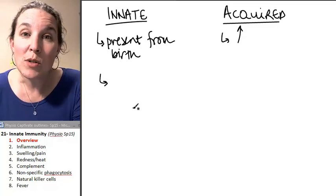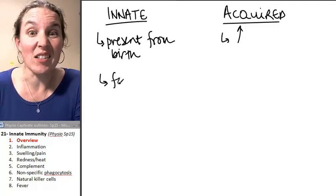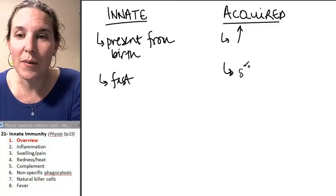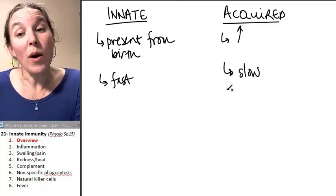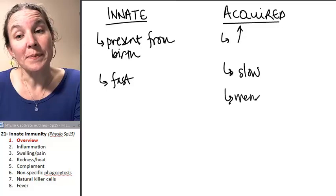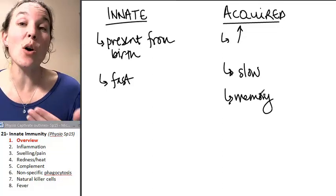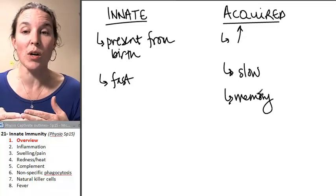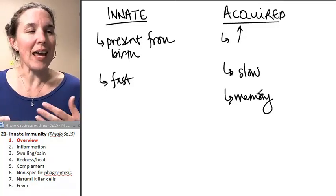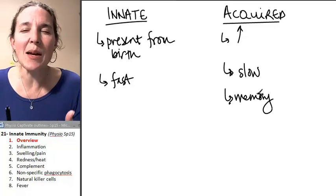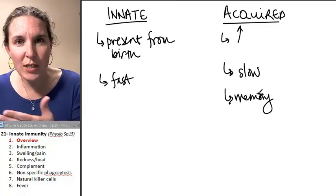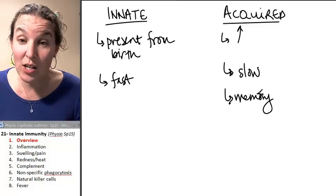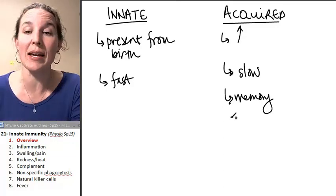The innate immune response is fast. Guess what the acquired immune response is? Slow. The acquired immune response has memory, which means even though it's slow, there is a memory that allows it to basically hang on to strategies. It took time to develop the strategy to attack the bad guy, but once you have the strategy, you're going to remember it and you can attack that bad guy again.